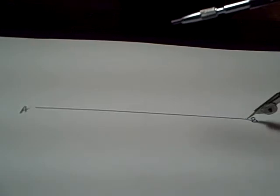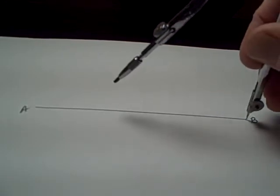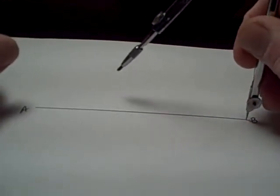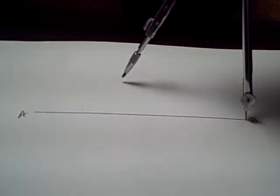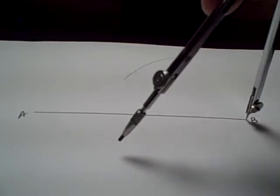First of all, take your compass and position the point at point B. Open the compass so that it's at least half as large as the line segment and then draw an arc atop the line and also below the line like that.